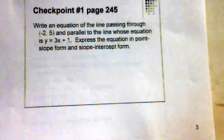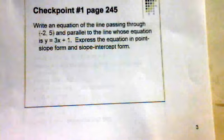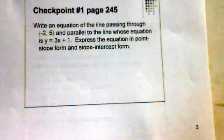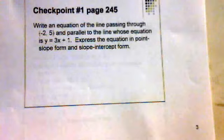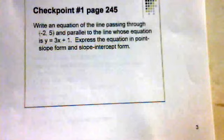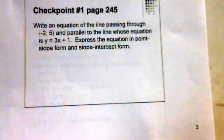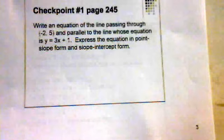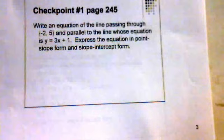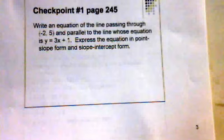Let's say we want to write an equation of a line passing through the point negative 2, 5, and parallel to the line whose equation is y is equal to 3x plus 1. We want to express the equation in point-slope form, passing through negative 2, 5, and it's going to be parallel to y equals 3x plus 1.